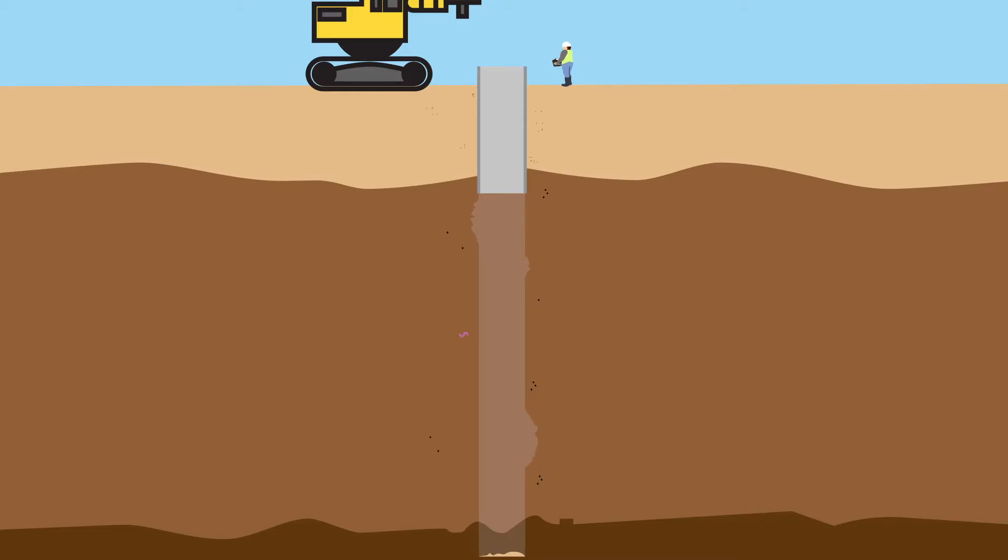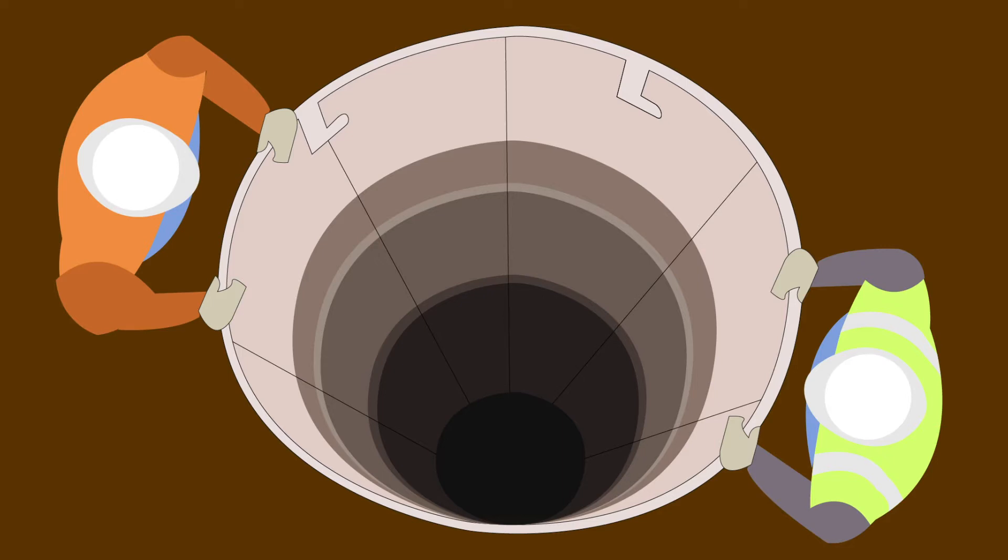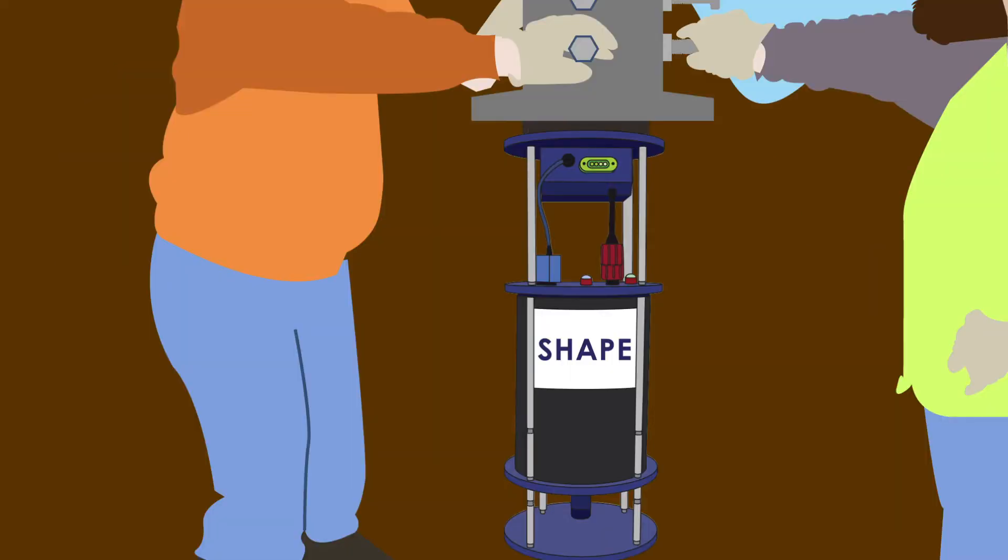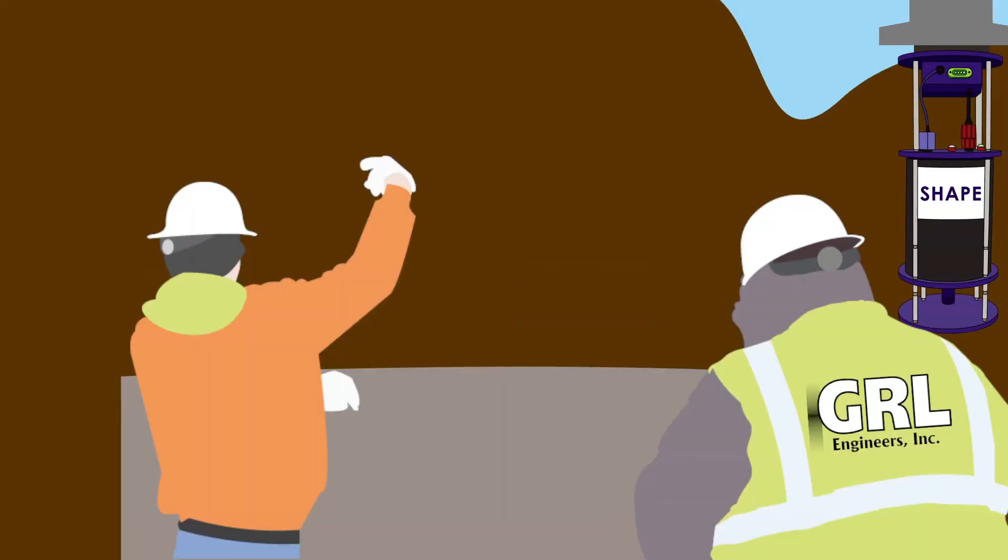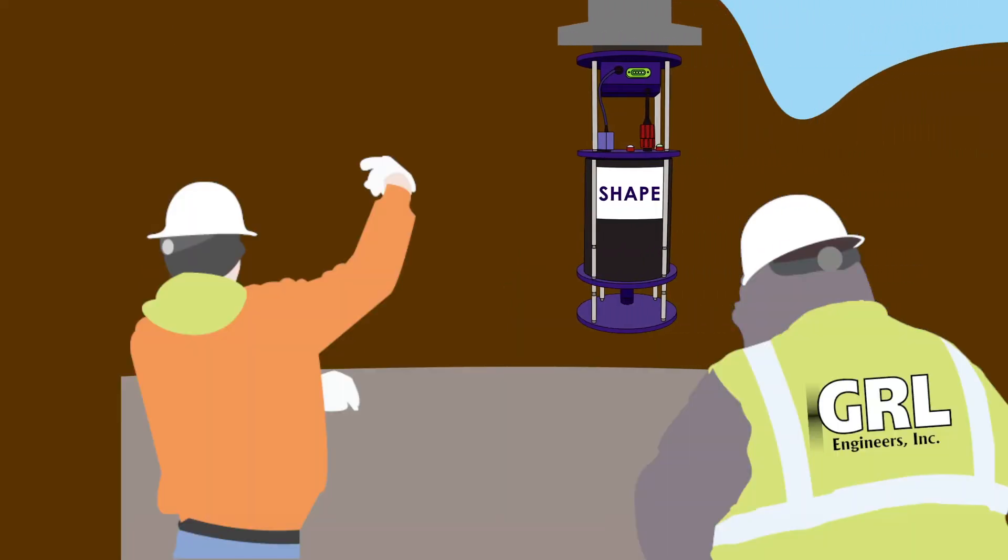An important aspect of drilled shaft construction is that the shaft verticality and profile meet specification requirements. GRL engineers perform verticality and profile evaluations using the shaft area profile evaluator or SHAPE.